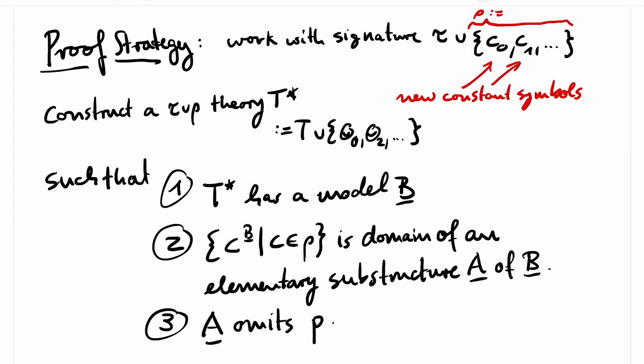Since A is an elementary substructure of B, it is in particular a model of T star, and by dropping the constant symbols, we obtain a tau structure which is a model of T that omits P.